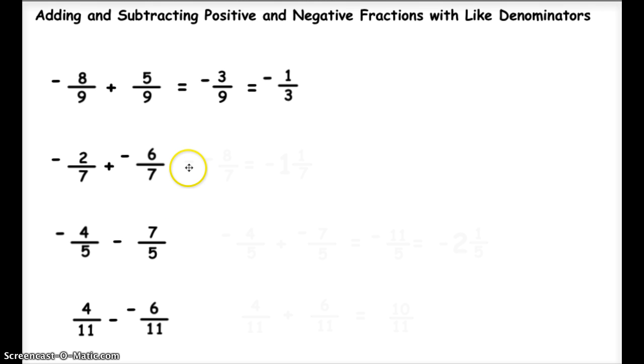When they work together, I just add the numerators up, and I get negative 8 sevenths. Now that's an improper fraction, so I have to change that to a mixed number. And 7 goes into 8 one time, with 1 remaining seventh, so my answer is negative 1 and 1 seventh.